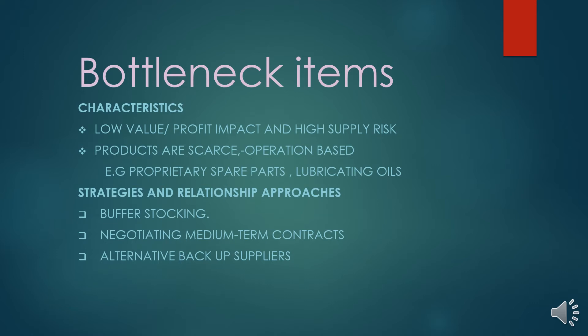When a machine breaks down, a particular spare part may be needed. If that spare part is difficult to obtain, it will delay or cause a breakdown in operations — meaning no more producing fruit juice. These items may have a low profit impact, but their supply risk is high. Some may be shipped from abroad and take days to arrive.